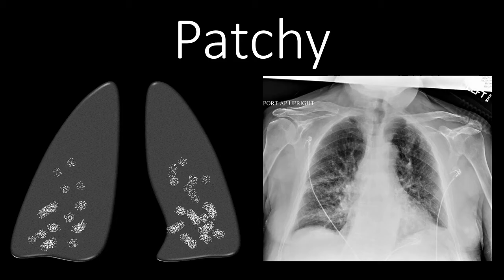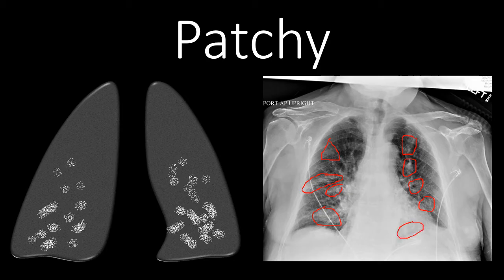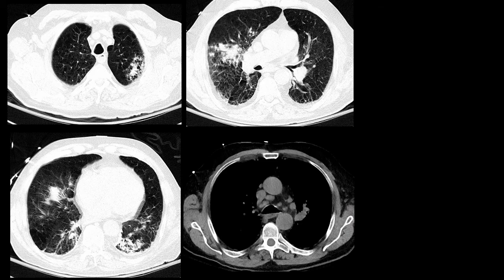The next thing to think about is whether it's ground glass, consolidation, or nodules, and what pattern that opacification results in. One pattern can be described as patchy or multifocal airspace opacities. Looking at this patient, the lung is clearly abnormal — it's not confluent, but there are many different areas of airspace opacification. On the chest CT in the same person, we again see these patches, predominantly consolidation but not confluent — patchy areas of airspace opacity.